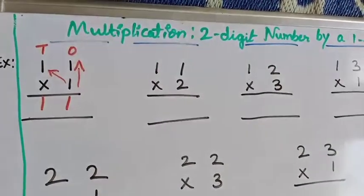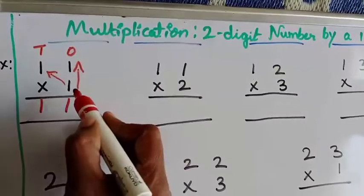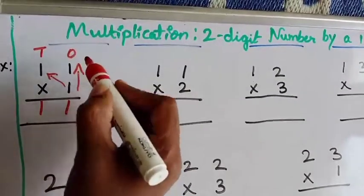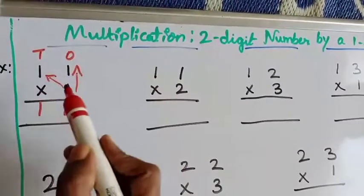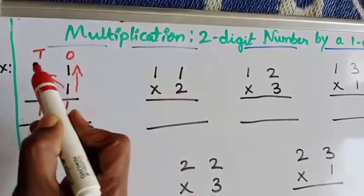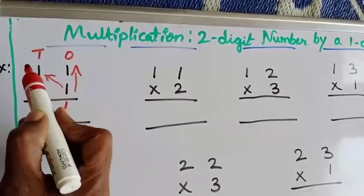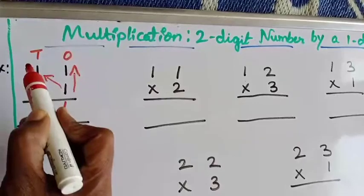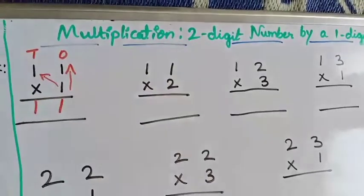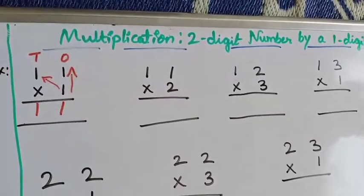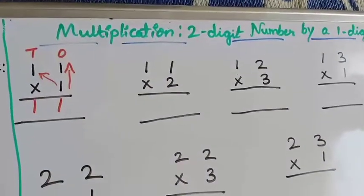So here, first we go down to up, then again down to up to the 10's place. That completes our first example, 11 into 1.